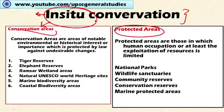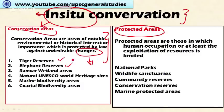Conservation areas are areas of notable environmental or historical interest because of their biodiversity or importance for human beings, and are protected by law against undesirable changes like interference by human beings and other encroachment. Conservation areas include tiger reserves, elephant reserves, Ramsar wetland areas for the conservation of wetlands, and natural UNESCO World Heritage Sites.